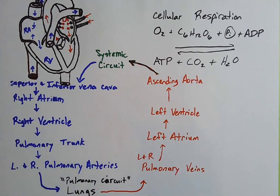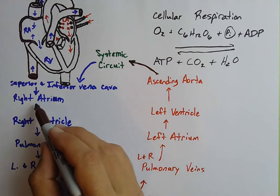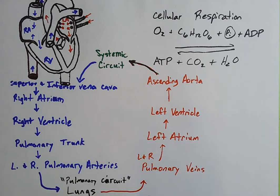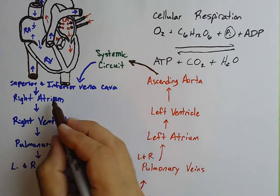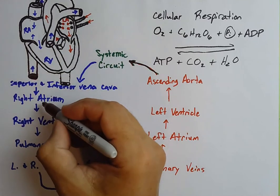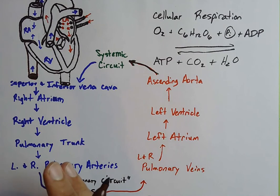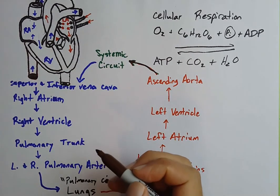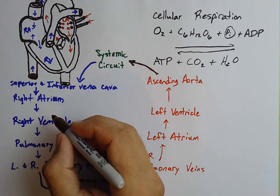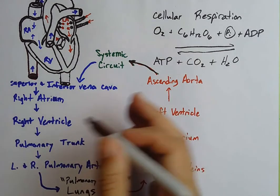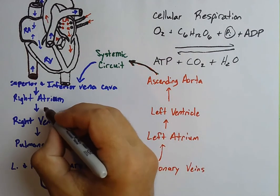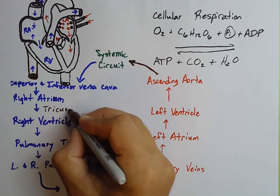Now, why are all the arrows pointed in a single direction? Why doesn't blood go backwards through the heart? The answer is valves. Valves prevent backflow and maintain unidirectional movement of blood. From the right atrium to the right ventricle, a valve forces blood in a single direction. When pressure builds up inside the right ventricle, it can't get back into the right atrium because this door closes. That valve is called the atrioventricular valve — the right AV valve — but it's also called the tricuspid valve.